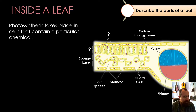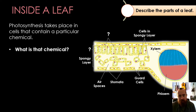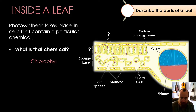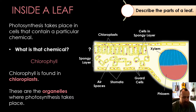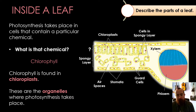Photosynthesis takes place in cells that contain a particular chemical. What is the chemical? This is a question people sometimes get wrong — they say chloroplast, but the chemical itself is called chlorophyll. Chlorophyll is the chemical found inside chloroplasts. Chloroplasts are the organelles where photosynthesis takes place. Organelles are the small organs inside a cell — the little bits that function like organs. Chloroplasts contain the chlorophyll, which is the chemical that absorbs the sunlight, allowing photosynthesis to happen.